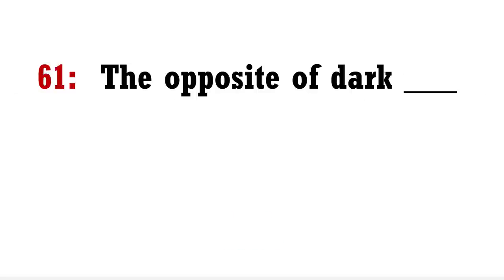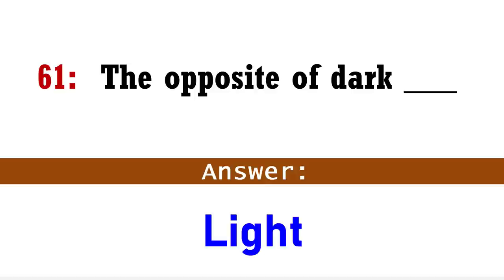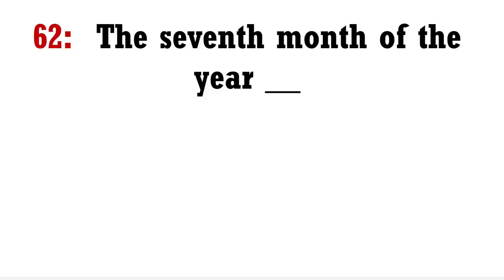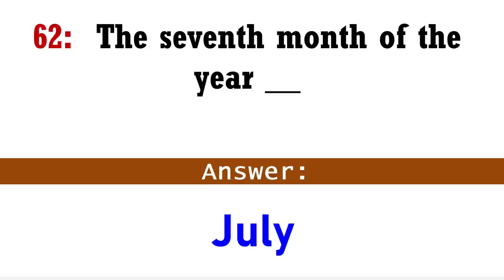The opposite of dark? Answer: Light. The seventh month of the year? Answer: July.